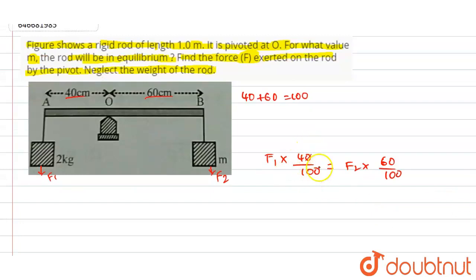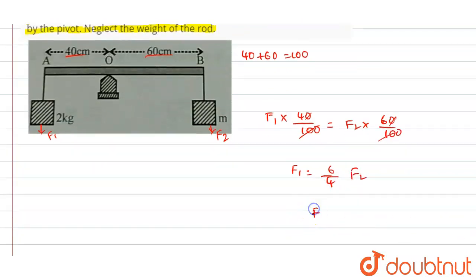Here by simplifying this, we will get the value of F1 will be equals to 6 divided by 4 into F2.